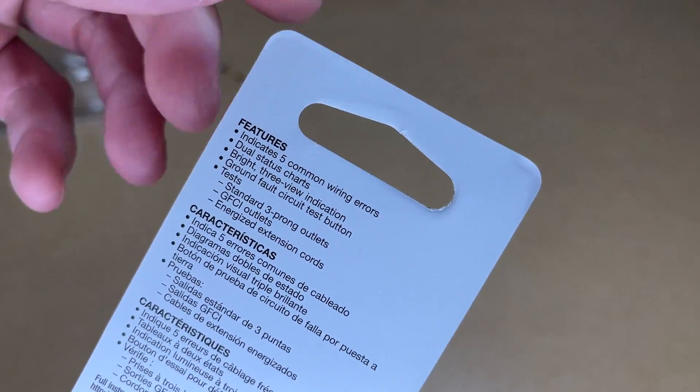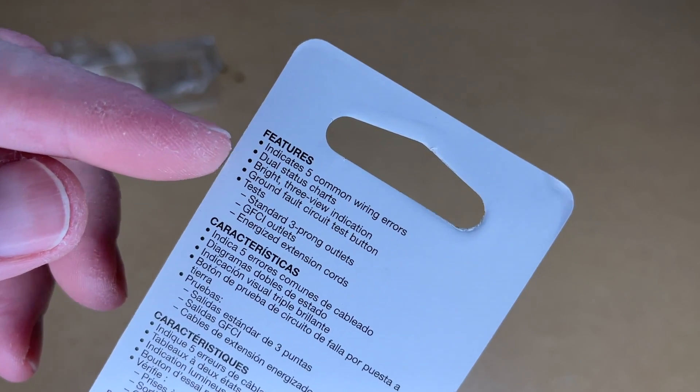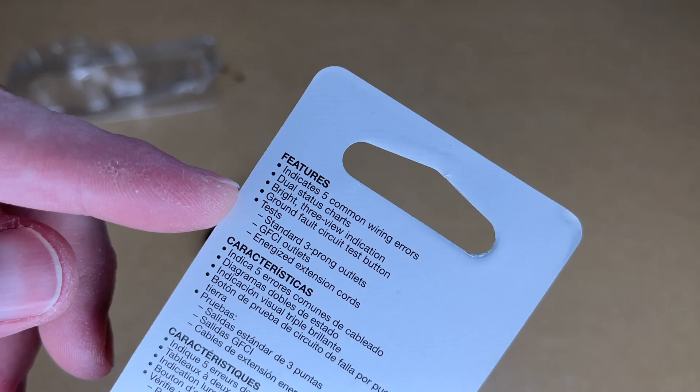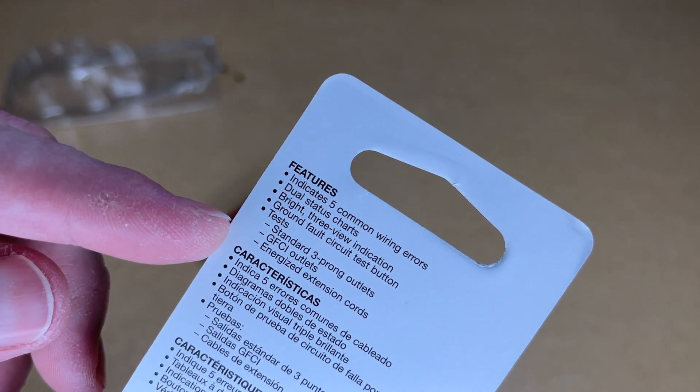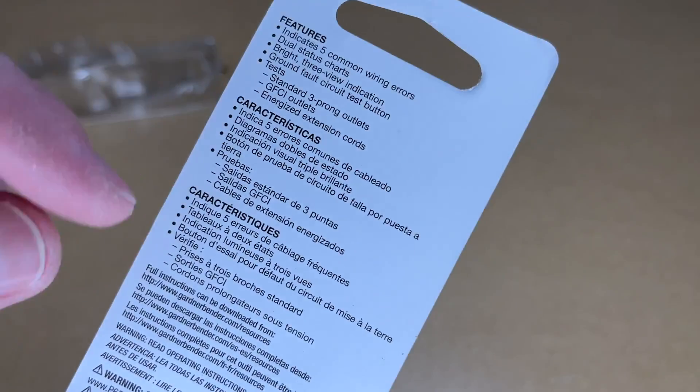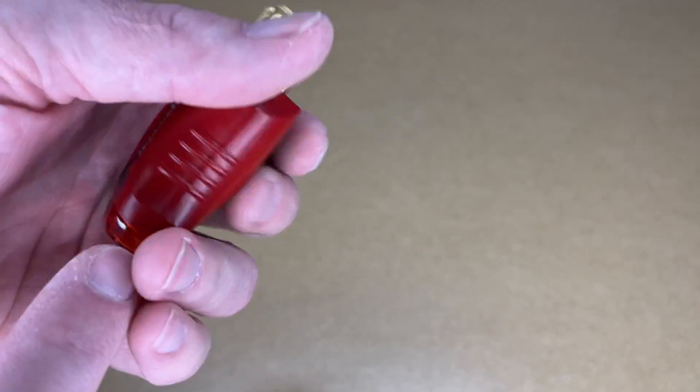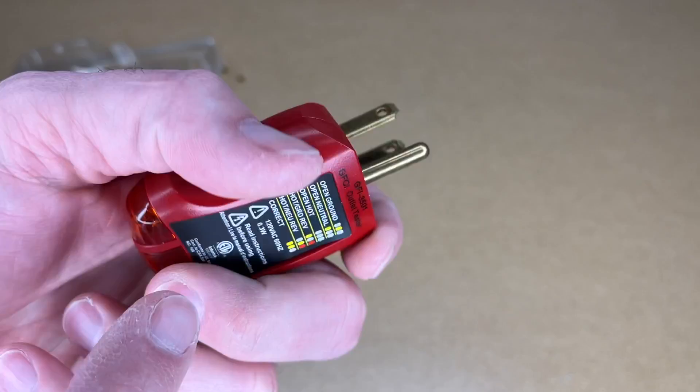It does list some features on the back. It says indicates five common wiring errors, dual status charts, bright three-view indication, ground fault circuit test button. It tests three-prong outlets, GFCI outlets, and energized extension cords. Here's the tester itself. It has a chart on here and it's on both sides, so that's good.